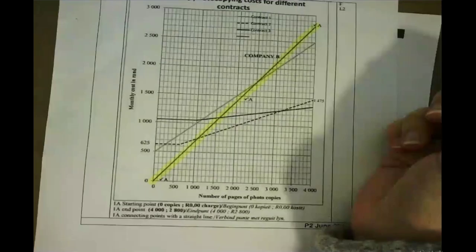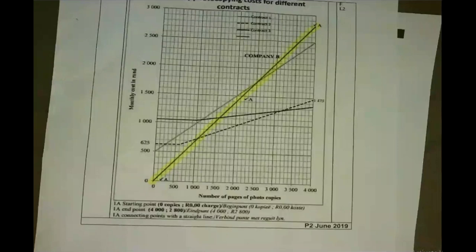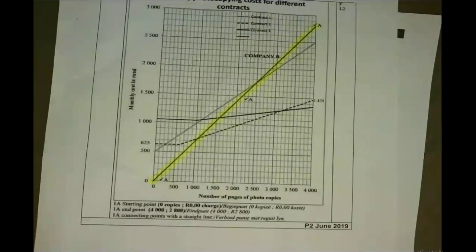Make sure you have a ruler — this is an underestimated section. Learners don't attempt it properly, don't use a ruler, walk out with the answer sheet inside the question paper, or answer it in their answer book instead. Please be mindful of these tips. That finishes the data section and graph drawing — any questions about graphs before I move on to maps and measurements?